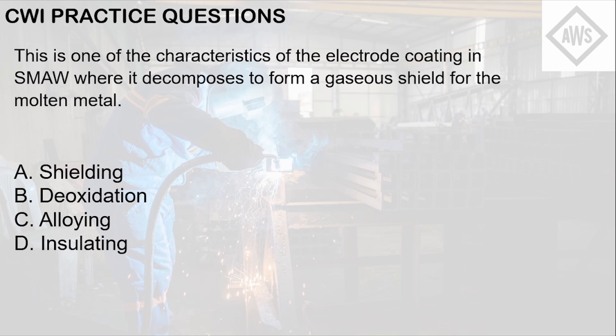Alloying refers to the addition of elements that improve the mechanical properties of the weld. Insulating is the property of the electrode that produces a solidified slag to prevent a sudden drop in temperature for the weld, thus preventing embrittlement. So the answer is letter A: shielding — the characteristic where the electrode coating decomposes to form a gaseous shield for the molten metal, protecting it from harmful gases that would embrittle the weld or cause weld defects.